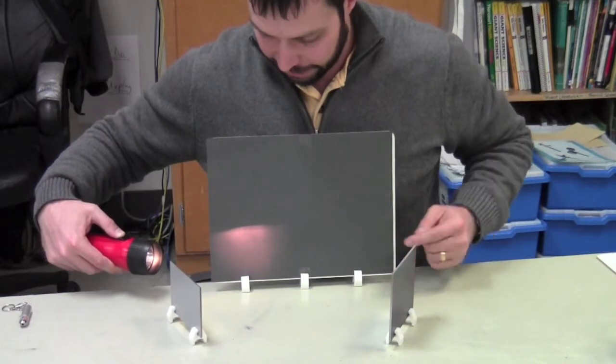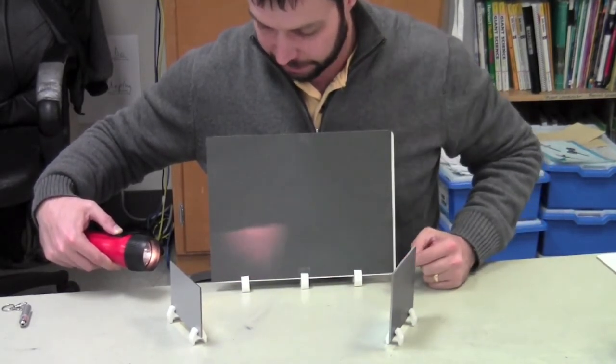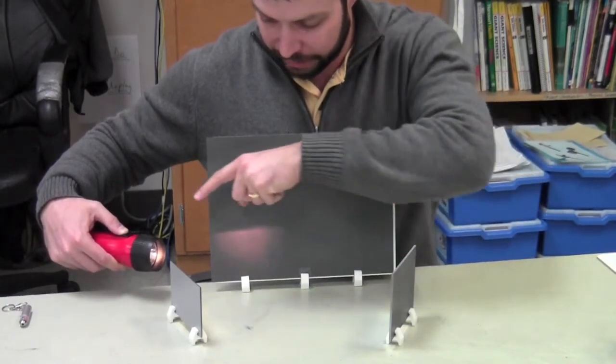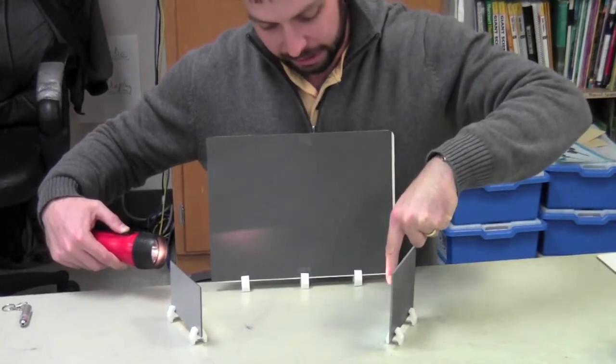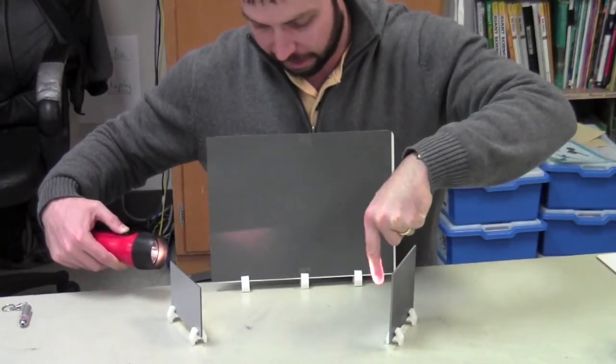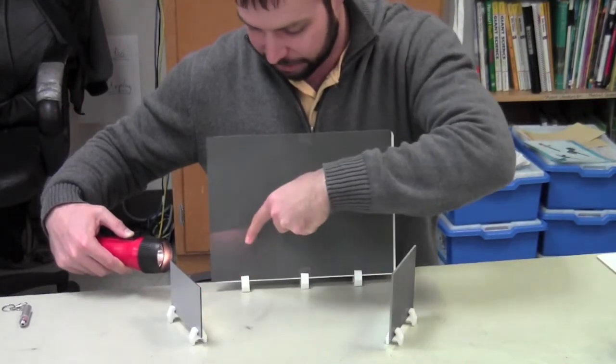As you can see, the light is showing up on this side of the construction paper, even though it originates from this flashlight. So the light is coming in contact with this mirror, it's bouncing off this mirror, going to this mirror, and then bouncing off this mirror to here.